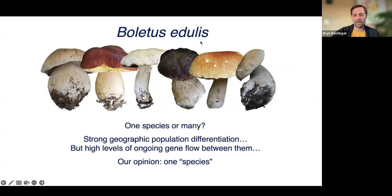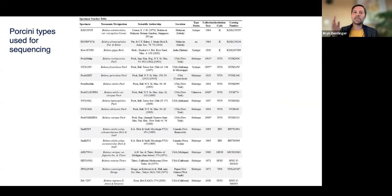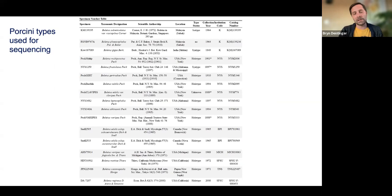I'm going to switch gears to how we can actually apply names accurately to these species. The only way you can do that is if you know what the type represents — the specimen designated at the time the species was described — and how that relates to modern collections. We rely heavily on DNA sequencing now because the morphology in Porcini is just so confusing that it's really hard to apply names with any confidence.